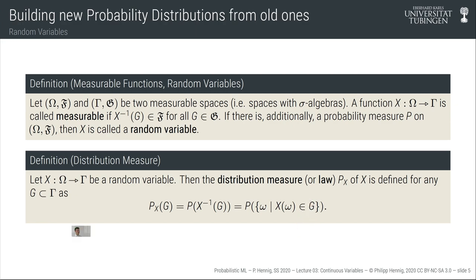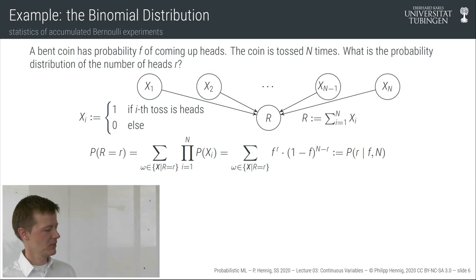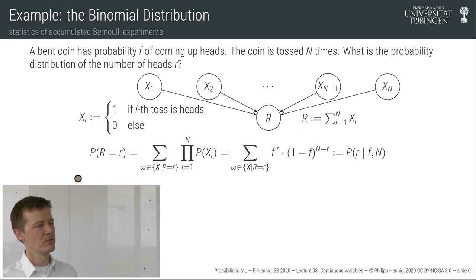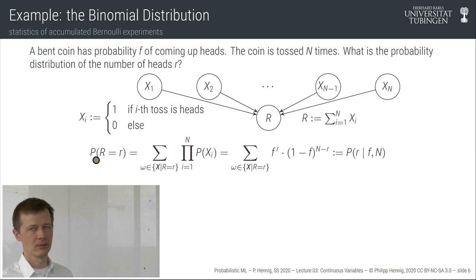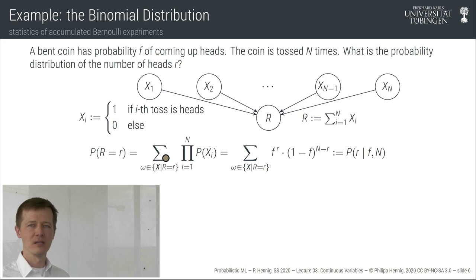Let's go back to the coin-toss example. The original space is all binary strings of length n, the sigma algebra is the power set, and the random variable r takes values from 0 to n. The law gives us: take the set of all configurations with exactly r heads, and check its probability. Under our generative process of independent throws, this is just the product of individual probabilities — the probability to get r heads and n minus r tails — which equals f^r times (1-f)^(n-r).